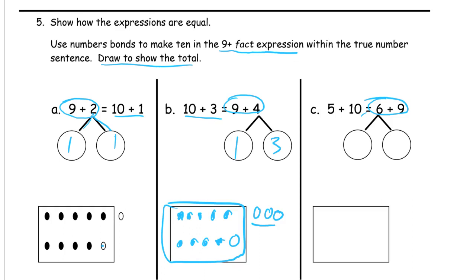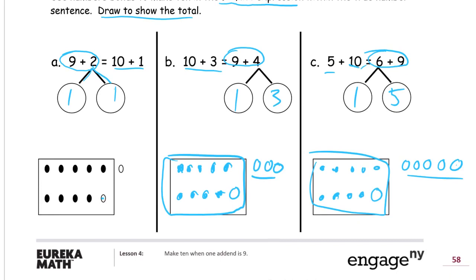5 plus 10 equals 6 plus 9. So draw the 9: 1, 2, 3, 4, 5, 6, 7, 8, 9. And then the 6: 1, 2, 3, 4, 5, 6. You see the 6 has 1 inside the box and 5 outside. So the 6 is split into 1 and 5. That's how you get your 10—there's your 10 in the box and your 5 outside. It's easier to add 5 plus 10 than 6 plus 9 because you can use that teen trick.